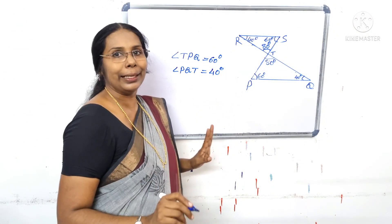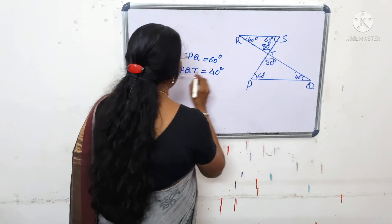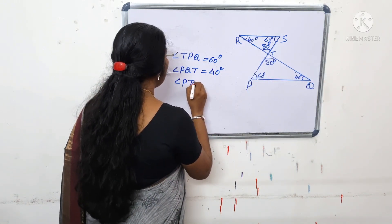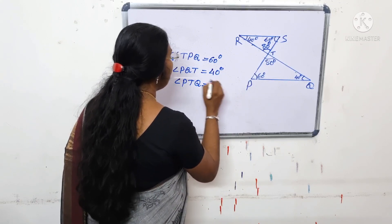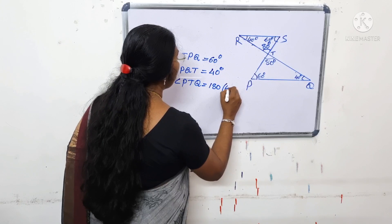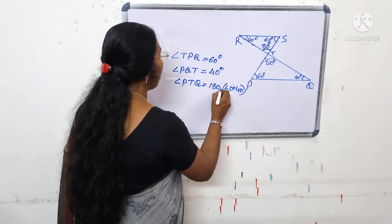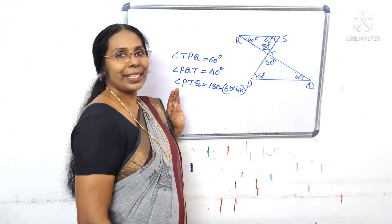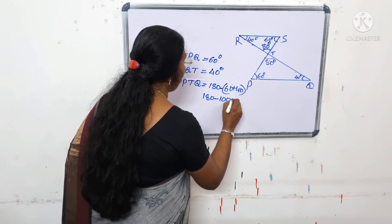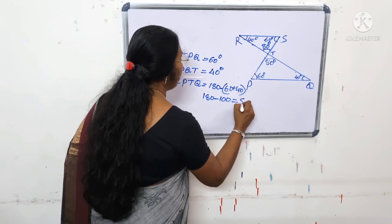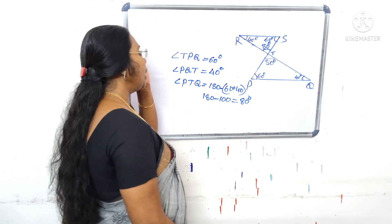TPQ is equal to 60 degrees. PQT is equal to 40 degrees. These two are equal to 50 degrees. PTQ is equal to 180 degrees. So, 180 degrees is equal to 80 degrees.